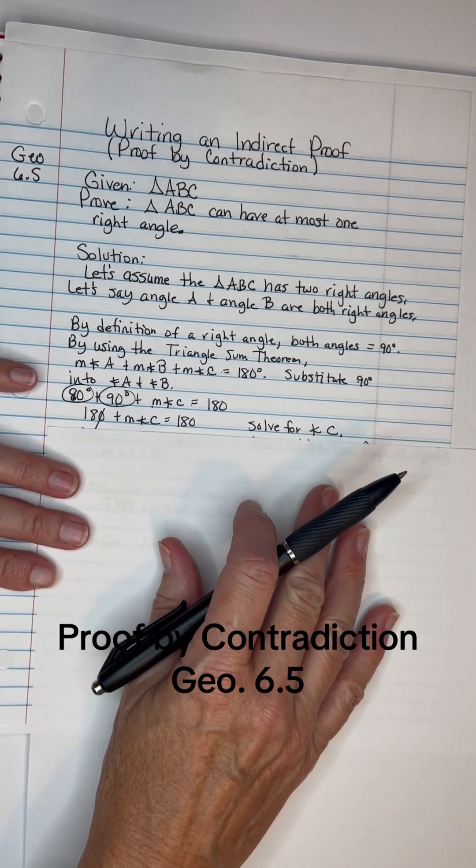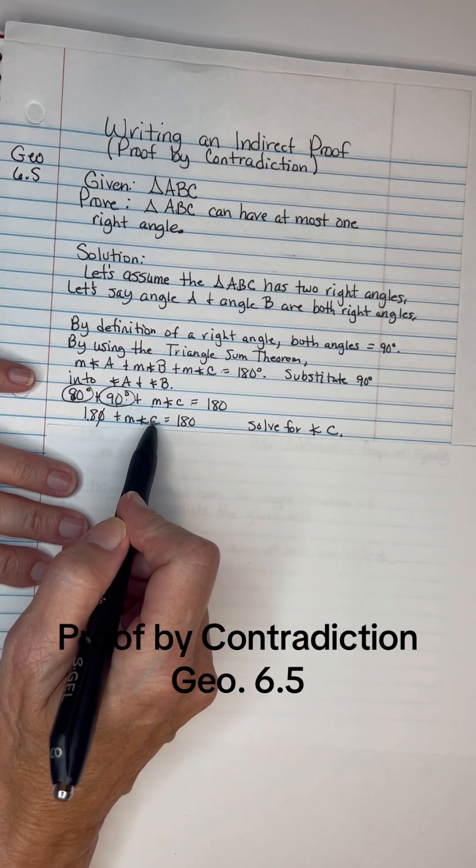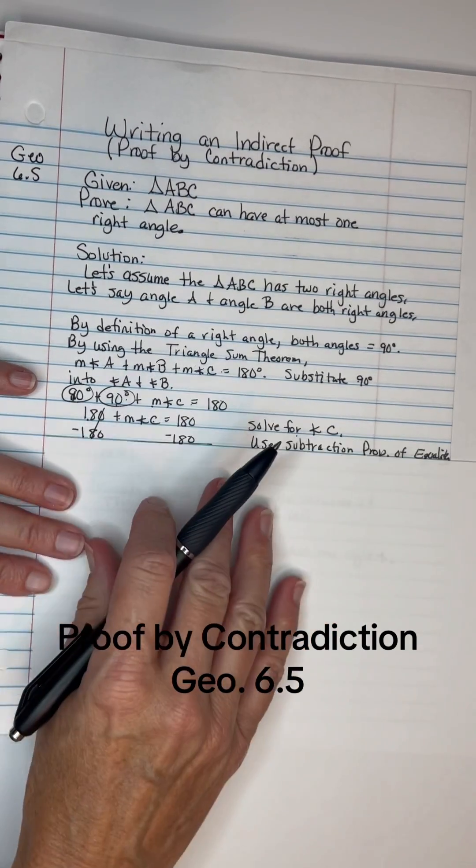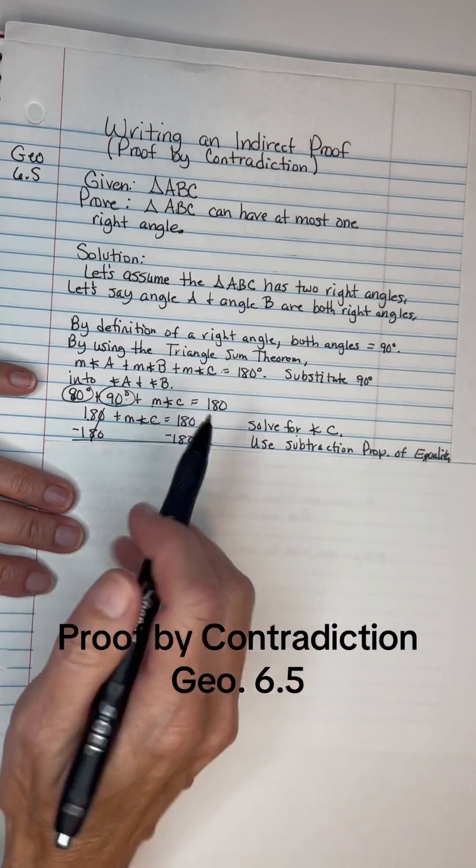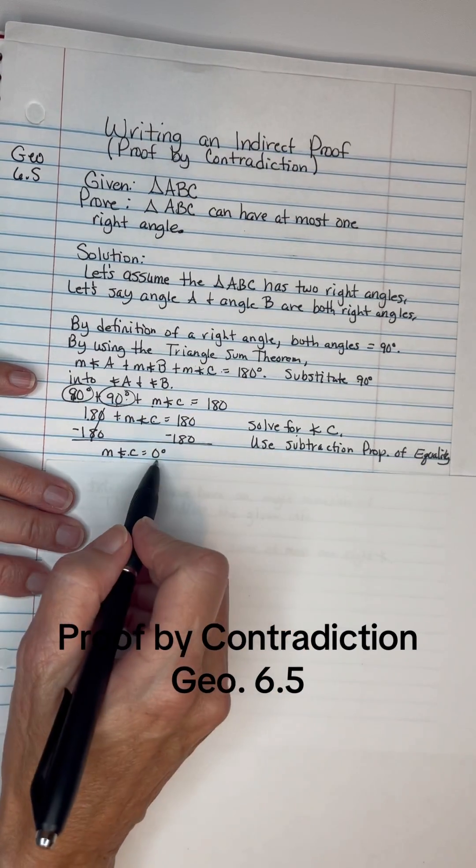Therefore, let's add the 90 and 90 and get 180. 180 plus the measure angle C equals 180. We're solving for C. We will subtract 180 from both sides and we're left with these canceling and these canceling. The measure of angle C equals 0 degrees.